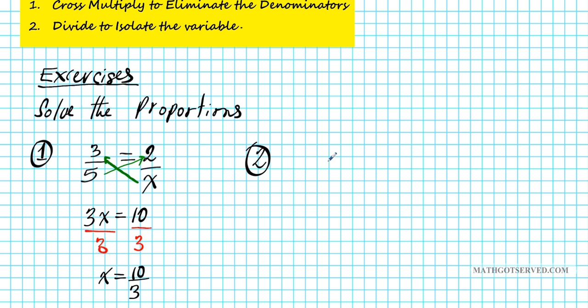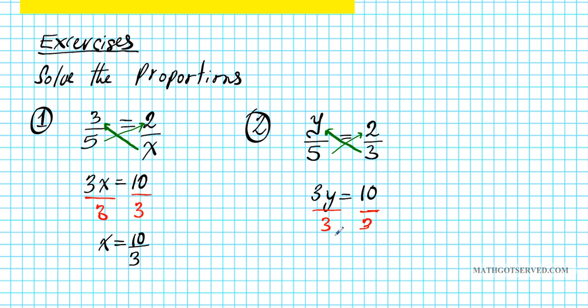Now, let's take a look at another example. What if we're to solve y over 5 equals 2 over 3? First step is to cross multiply to get rid of the denominator, so you just cross multiply, so you have 3y equals 10, and then you divide both sides by 3 to isolate y. Okay, so your final answer here will be y equals 10 over 3.